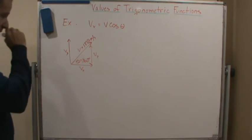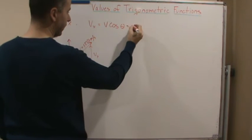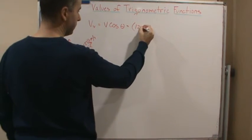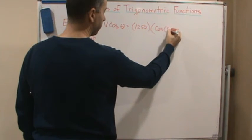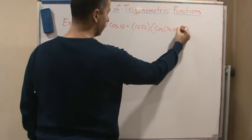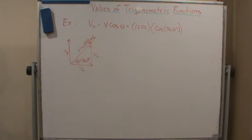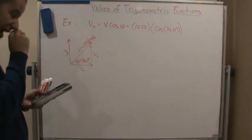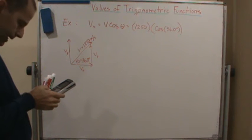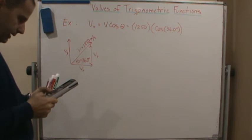So now, we want to find v sub x using this formula. It's going to be 1250 meters per second times the cosine of 36.0 degrees. That's what we're putting into our calculator. All you have to do is take 1250 times the cosine of 36, and then enter...